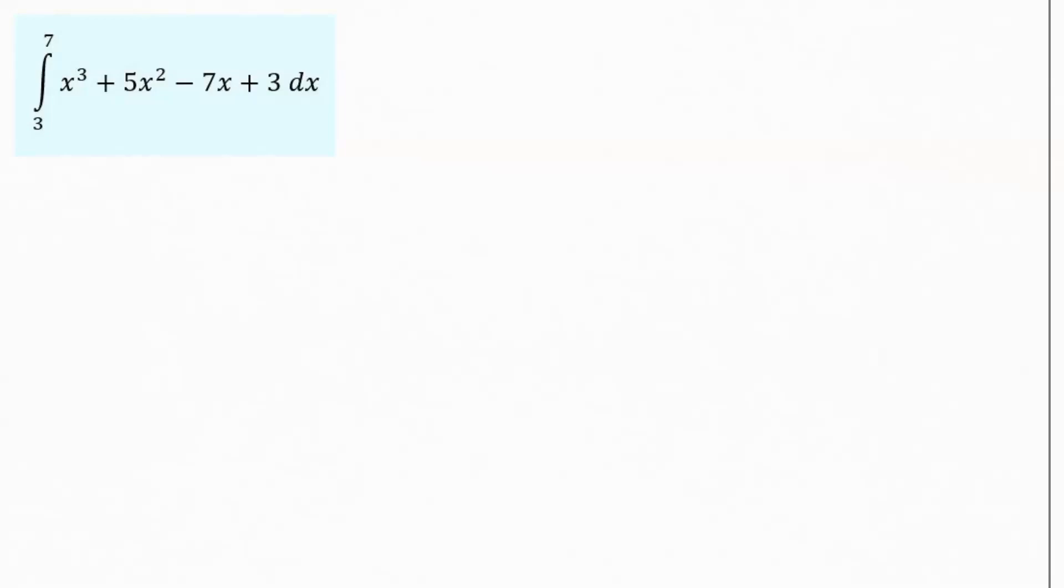This is an example of a definite integral. A definite integral means you are going to get a definite answer out, an actual number of value. You can tell it's a definite integral because you're always going to have bounds on it, so numbers here. So we've got a lower bound of 3 and an upper bound of 7.